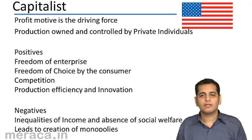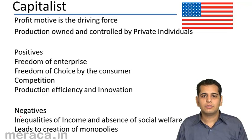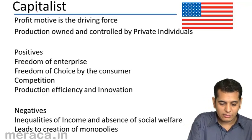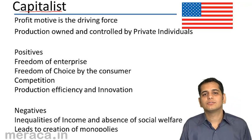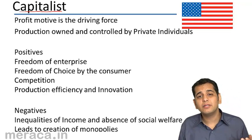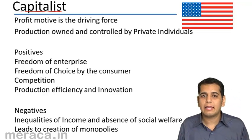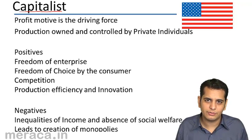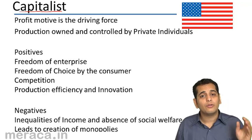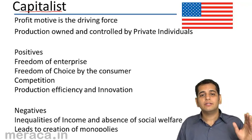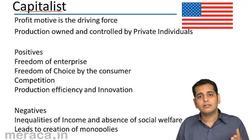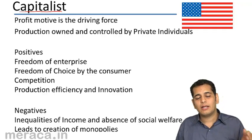First is capitalist economy. What is a capitalist economy? As the word goes, capitalist — an economy governed by capitalists, the persons who have capital in their hands. Not only the capital, but the other factors of production as well: land, labor, and enterprise.